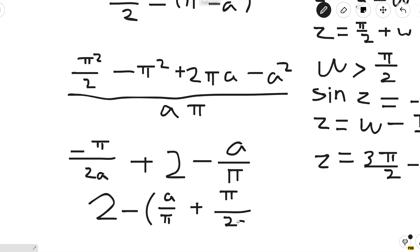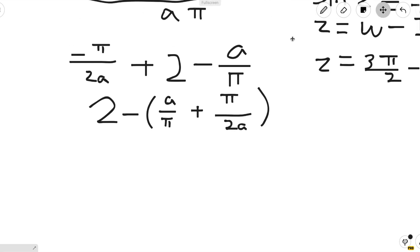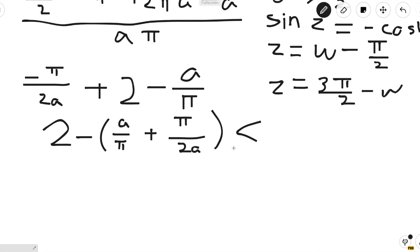Now it may look like we're going to need some calculus to solve this problem, but we can actually use AM-GM on the last two terms. So this is less than or equal to 2 - 2√(a/π × π/2a).